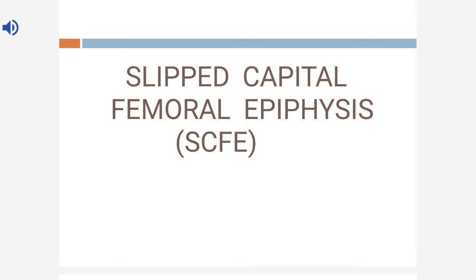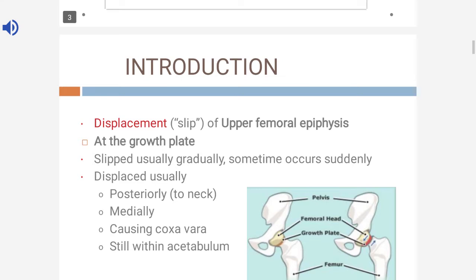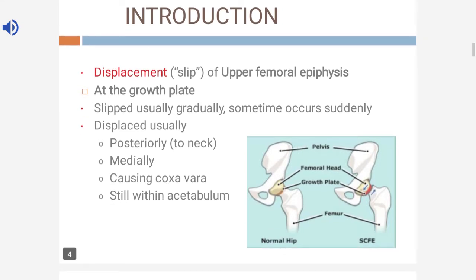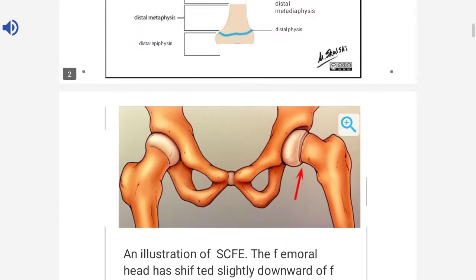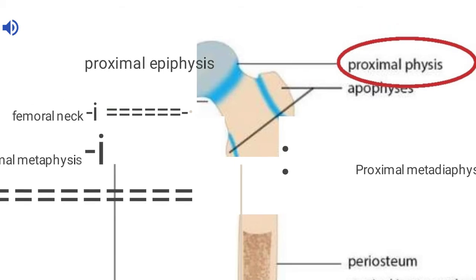Today's topic of discussion is slipped capital femoral epiphysis. It is a displacement of the upper femoral epiphysis at the growth plate. As you can see here, this is the epiphysis of the femoral head, and just below that we have the proximal physis, and below the proximal physis we have the femoral neck.